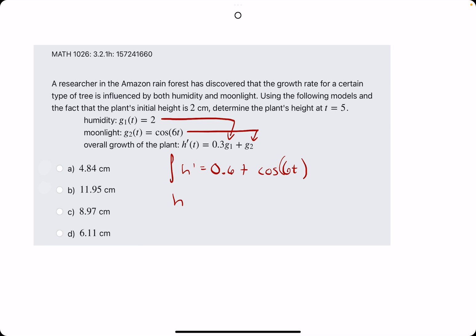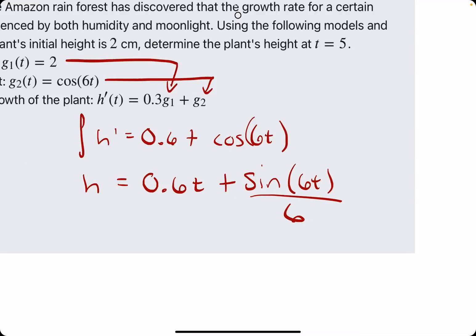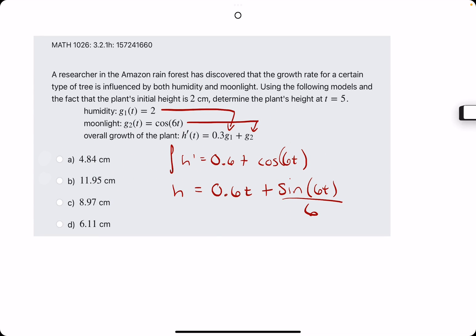Take the antiderivative and we find that h is equal to 0.6t plus, the antiderivative of positive cosine is positive sine of 6t. And then the pattern is we divide by that 6, or the derivative of the inside of the parentheses. Tack on plus C.